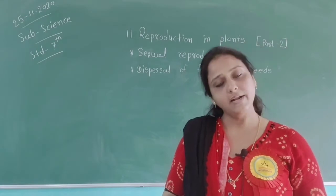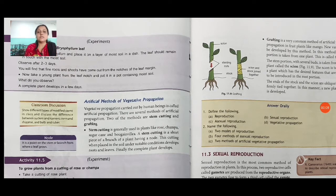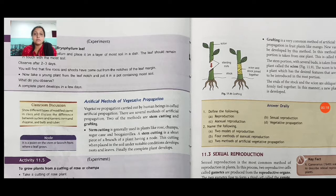Now, artificial methods of vegetative propagation. We have previously discussed natural methods. Vegetative propagation carried out by human beings is called artificial. There are several methods of artificial propagation; two of the methods are stem cutting and grafting.